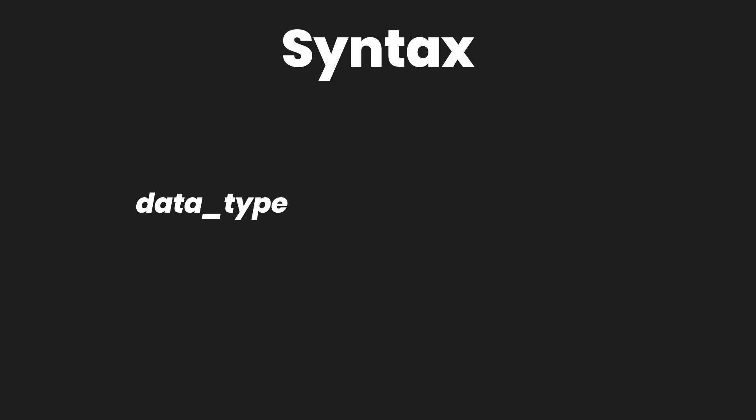I know this all sounds a little confusing, but once you have applied pointers or used them in your code, you'll get the hang of it. Coming back to our syntax: we have the data type followed by the asterisk symbol with the identifier — the name of the variable, just like you name a normal variable. Then you follow it up with the assignment operator, and to point to the address of a particular value, you use the AND operator, which is often referred to as the address operator. All in all, you have the data type followed by the asterisk symbol with the identifier, set equal to a particular address of the memory location.